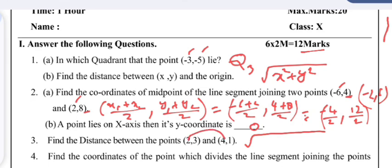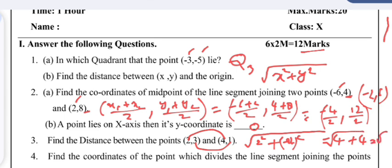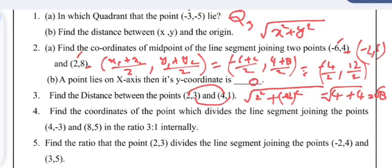The difference between x-coordinates: 4 − 2 = 2, so 2² = 4. The difference between y-coordinates: −1 − 3 = −2, so (−2)² = 4. Therefore 4 + 4 = 8, and the distance between these two points is √8.